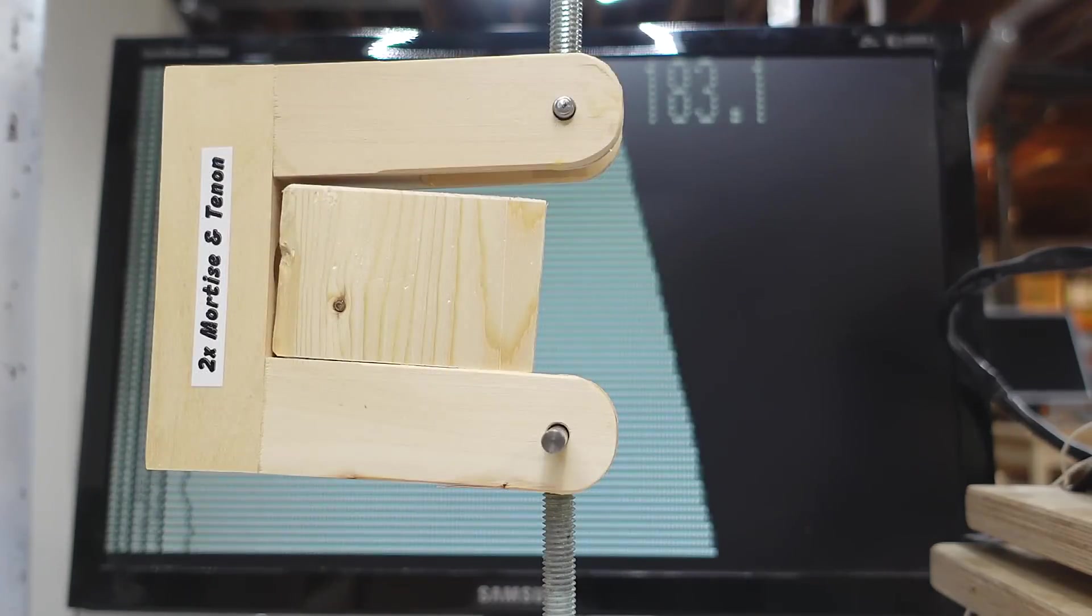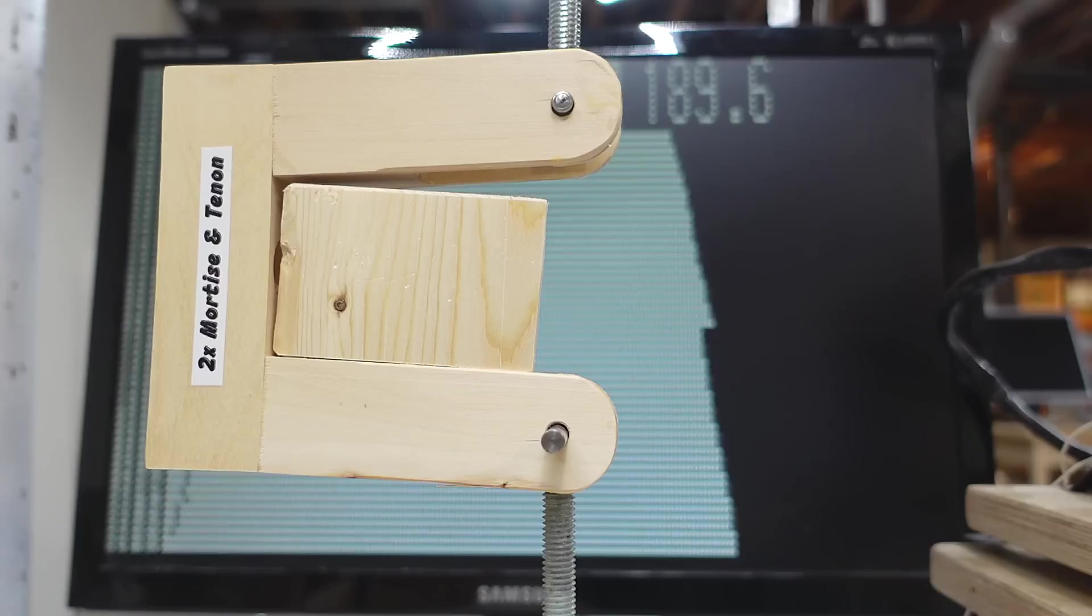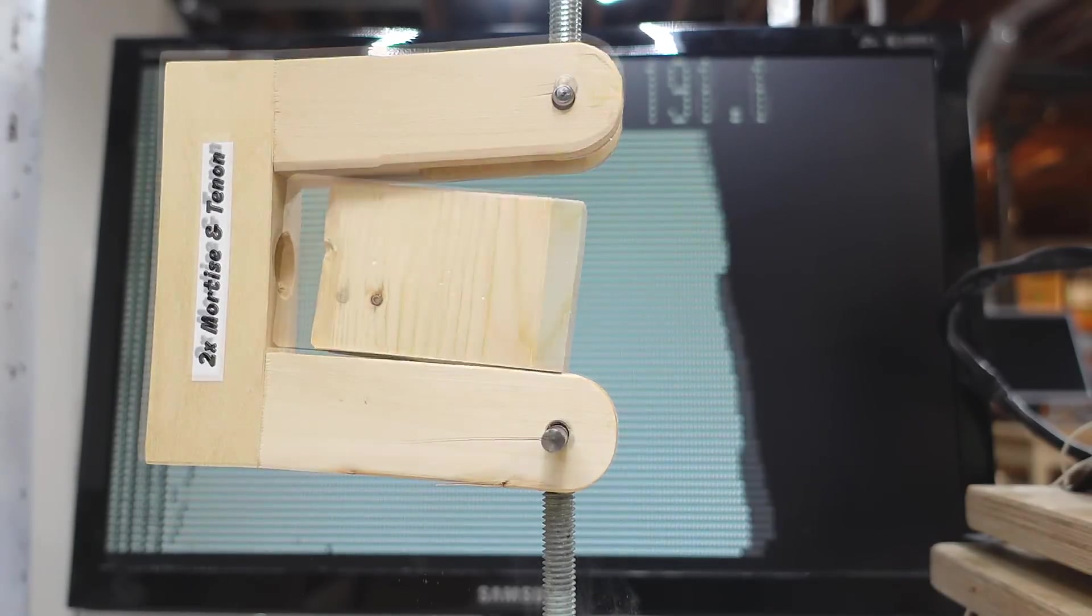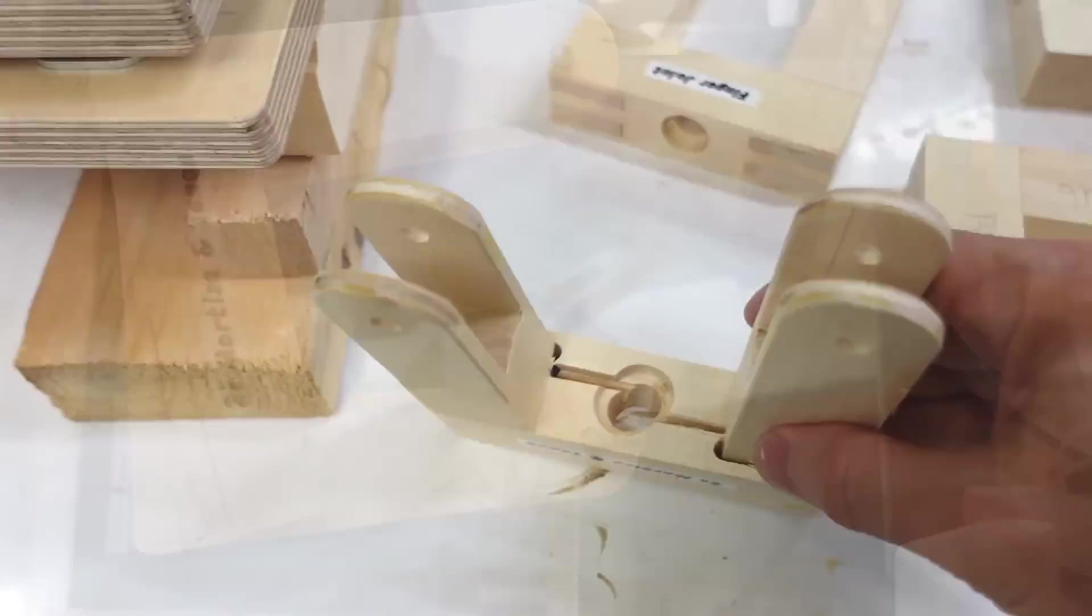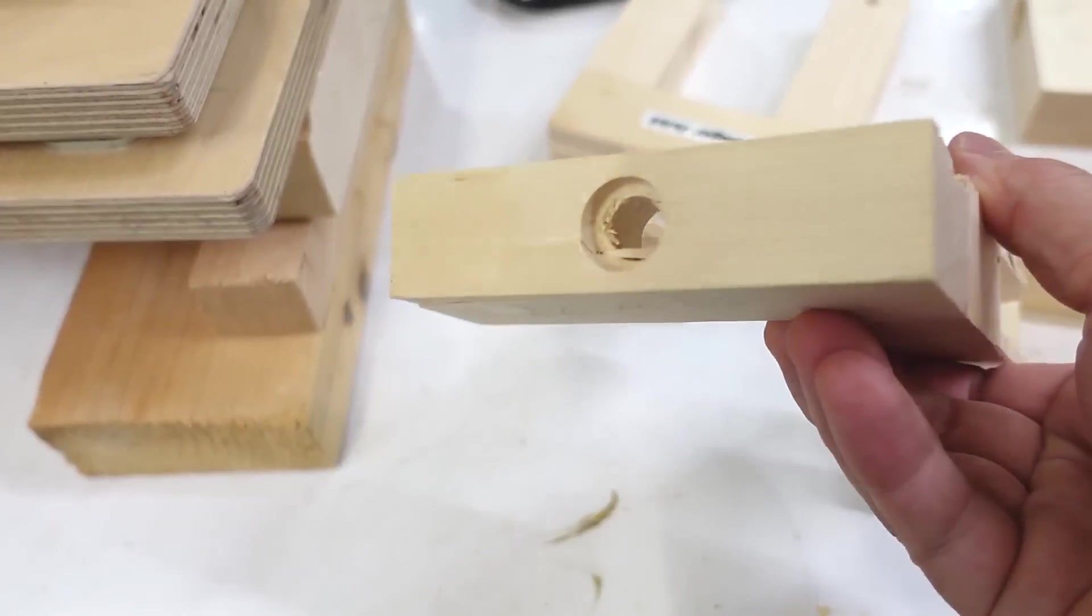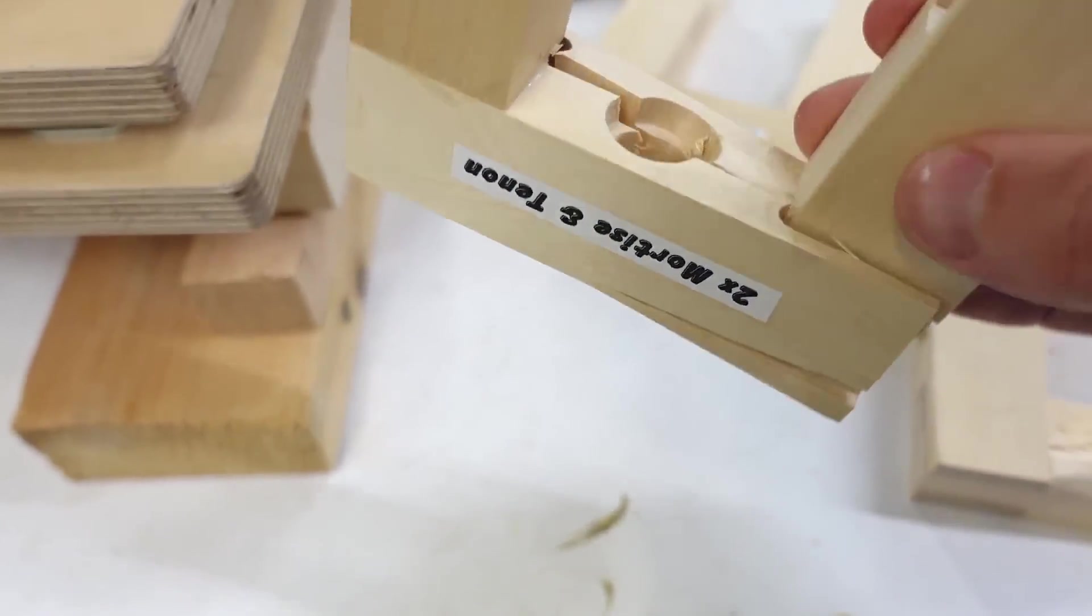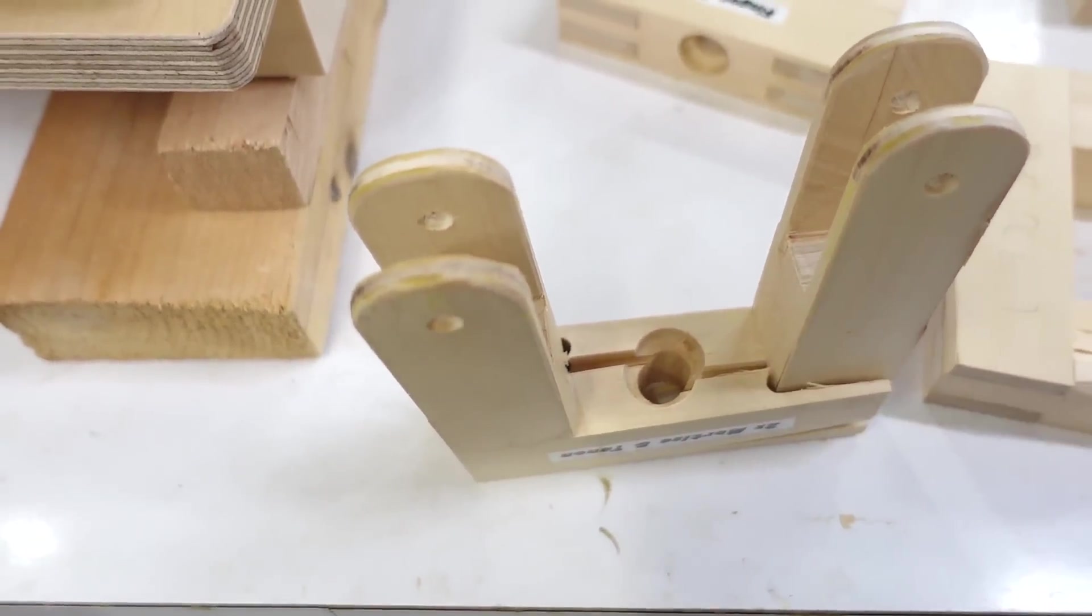And, here's the second double mortise and tenon joint one. And, the second double mortise and tenon joint had an interesting failure. I'd say this hole in here definitely contributed.